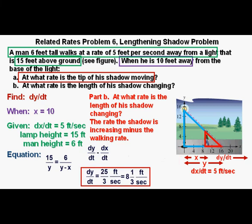The rate the tip of the shadow is moving increases the length of the shadow at the same time that the man walking in front of the lamp decreases that shadow length.